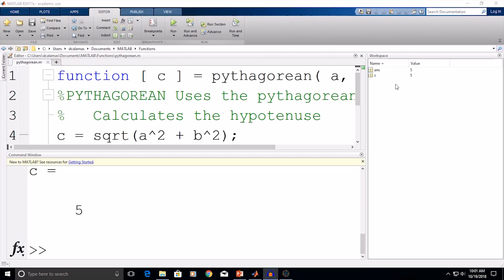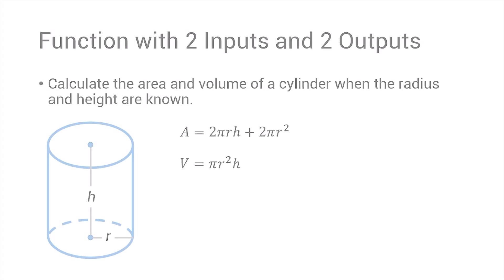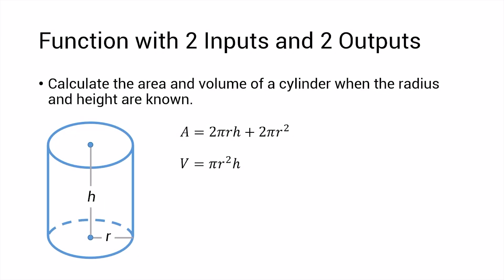Now let's take a look at a second example. The purpose of this function is going to be to calculate the area and volume of a cylinder when the radius and height are known. This function is going to have two inputs and two outputs. Our input arguments are going to be the radius and the height of the cylinder, and our output arguments are going to be the area and volume of the cylinder. Let's move to MATLAB.